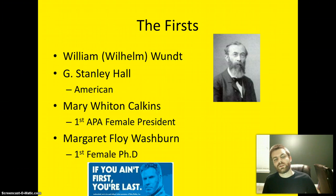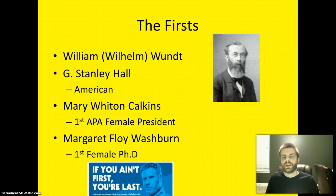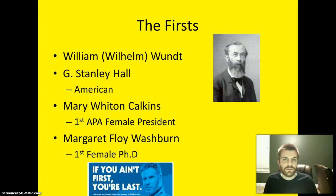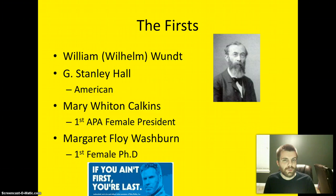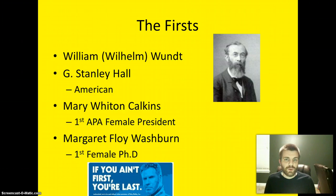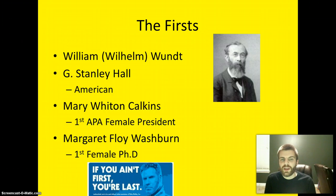Wundt starts a research lab in Leipzig, Germany, where he tutors and trains many other psychologists who will make their way around the world. One famous one for Americans is G. Stanley Hall, considered the first American psychologist. He establishes a research lab, sets up a journal, and becomes the first president of the APA — the American Psychological Association. For females, you have Mary Whiton Calkins, the first female APA president, and Margaret Floy Washburn, the first female to receive a PhD in psychology.